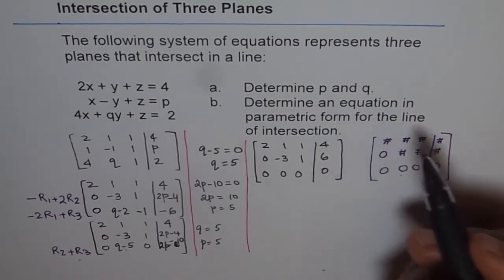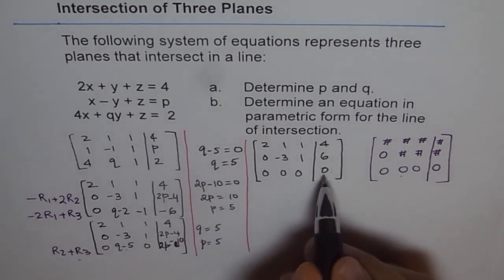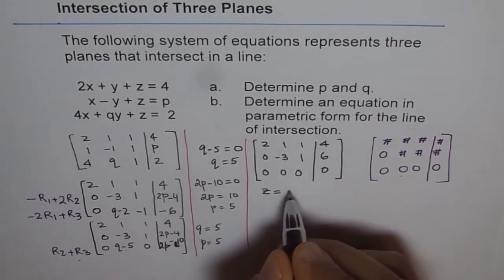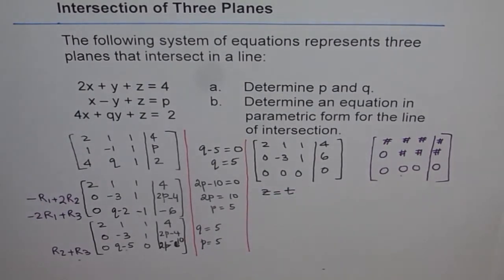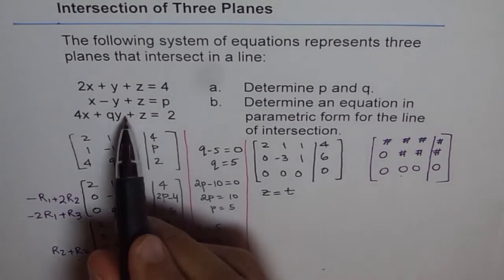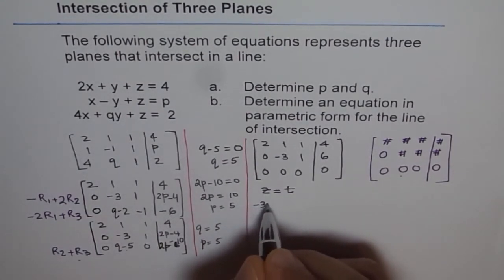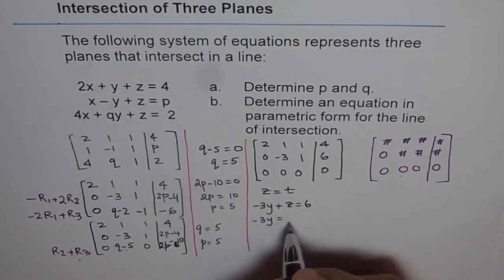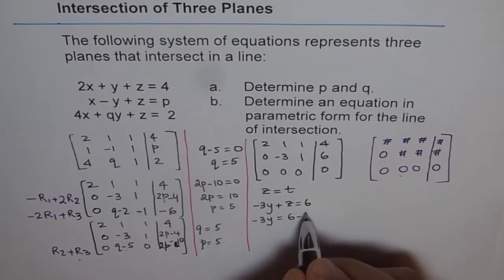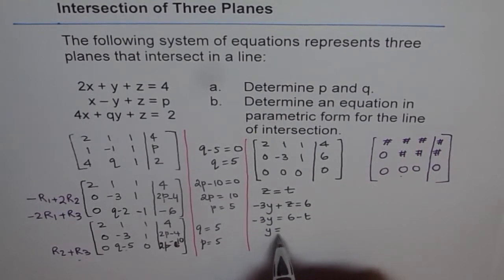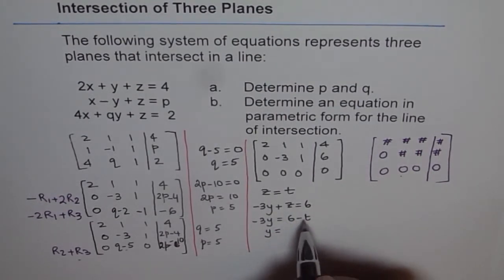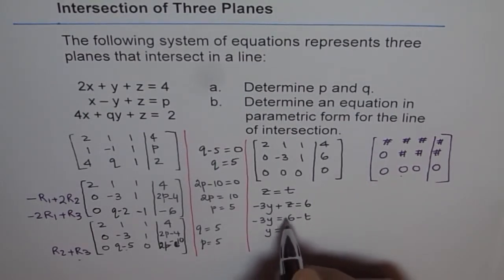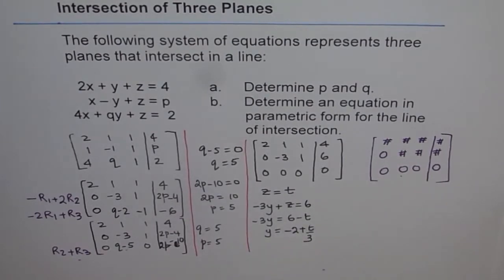From the reduced matrix, since the last row is all zeros, we set z equals t as our parameter — this equation is always true: 0 plus 0 plus 0 equals 0. From row 2, we get minus 3y plus z equals 6. Substituting z equals t: minus 3y equals 6 minus t, so y equals minus 2 plus t over 3.